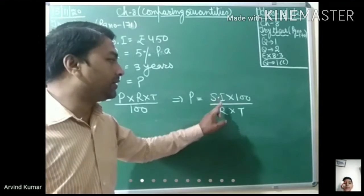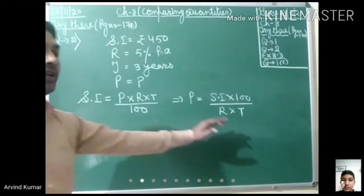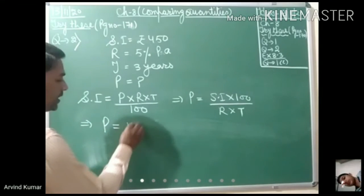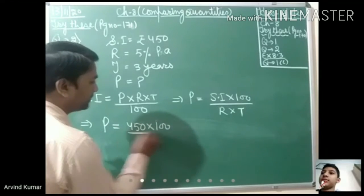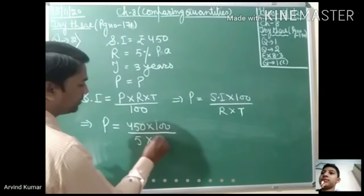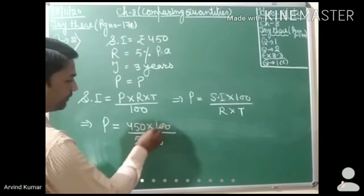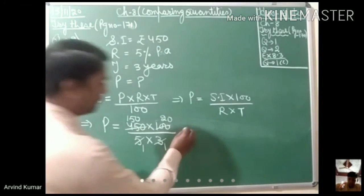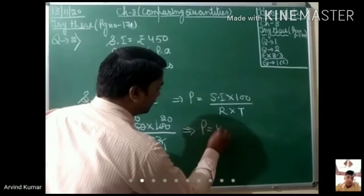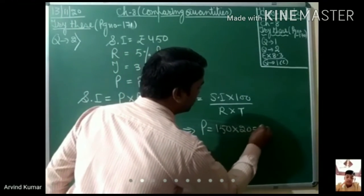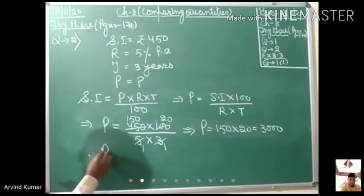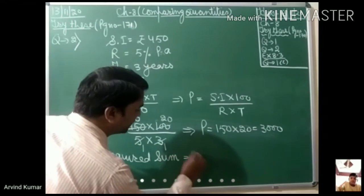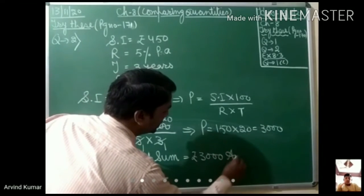Putting the given values of simple interest, rate, and time here to calculate the principal amount: P = 450 × 100 over 5 × 3. On simplifying, we get 150 × 20, which is equal to 3,000. Therefore, the required sum is equal to rupees 3,000. This is the required answer.